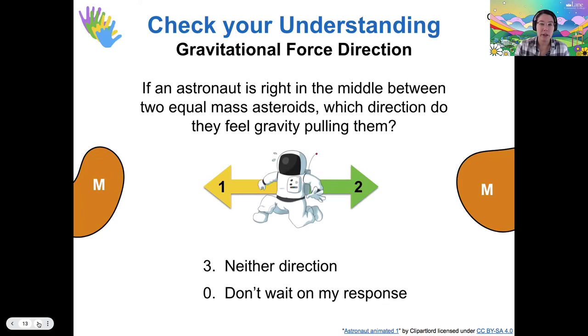Okay, so let's check on this. Thinking about the direction of gravitational forces: if I have this astronaut and they are right between two equal mass asteroids, which direction would they feel gravity pulling them? And I'm seeing by and far the most votes for option number three. The astronaut is not pulled toward either asteroid, because the force from this asteroid is the same as this one if they have the same mass and they're the same distance from the astronaut, exactly.